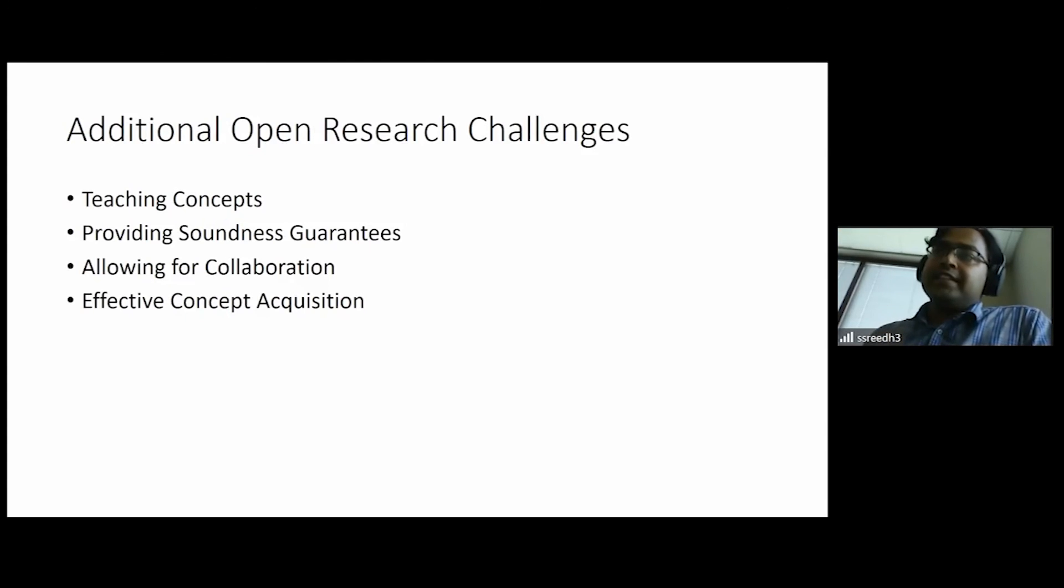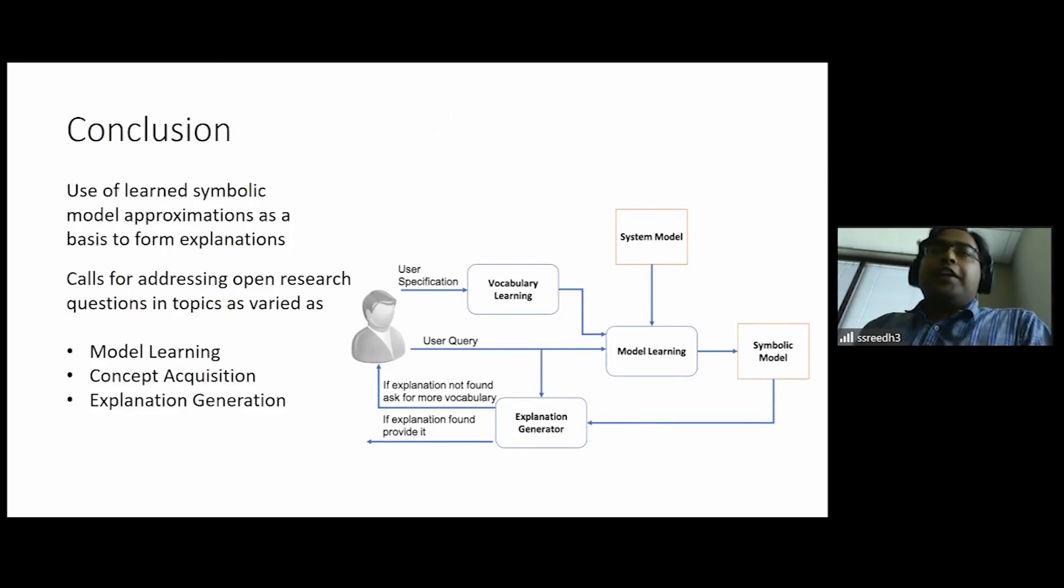And there are a lot more challenges. If people are interested in looking at this, things that are very hard. Like, what happens if a person doesn't have a concept that is enough to explain things, the decision? So, it's coming back to the question of ITS. How do you teach someone a new concept? How do you provide soundness guarantees? How do you allow, what Christine was talking about? We need symbolic interfaces that allows people to give their preferences. So, can we use these kind of post-hoc-learned models to give those kind of preferences? And also, we are getting these concepts from people. So, we want to learn these concepts as effectively as possible with the least amount of input. So, I can keep going on and on, but due to the lack of time, I won't.